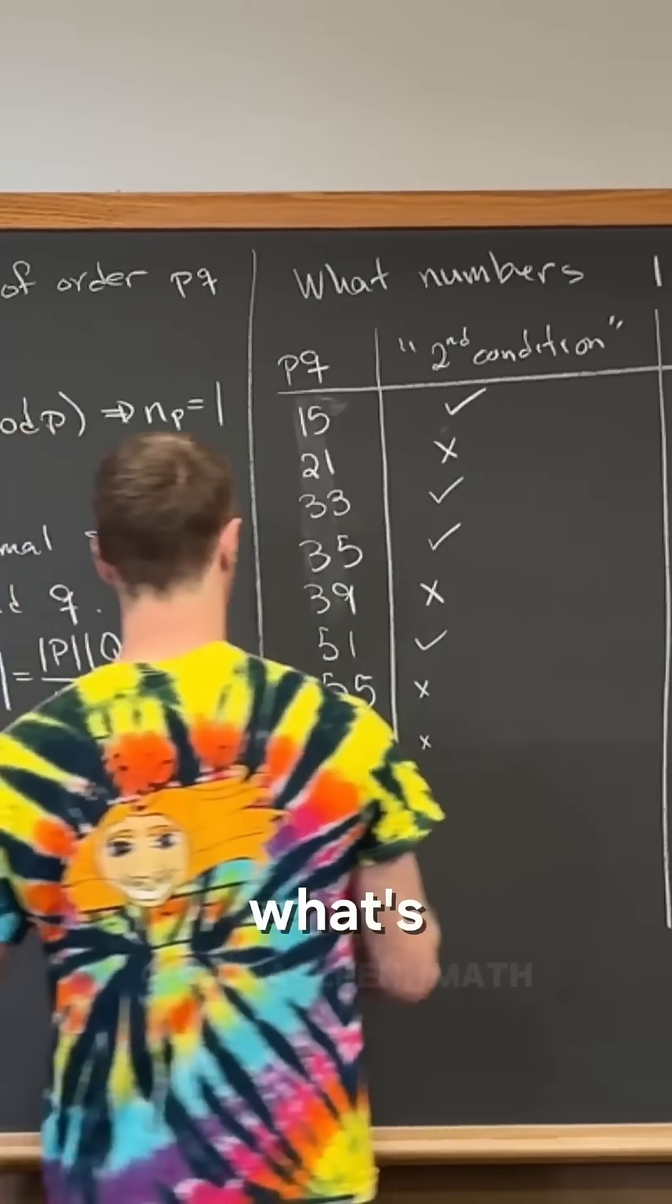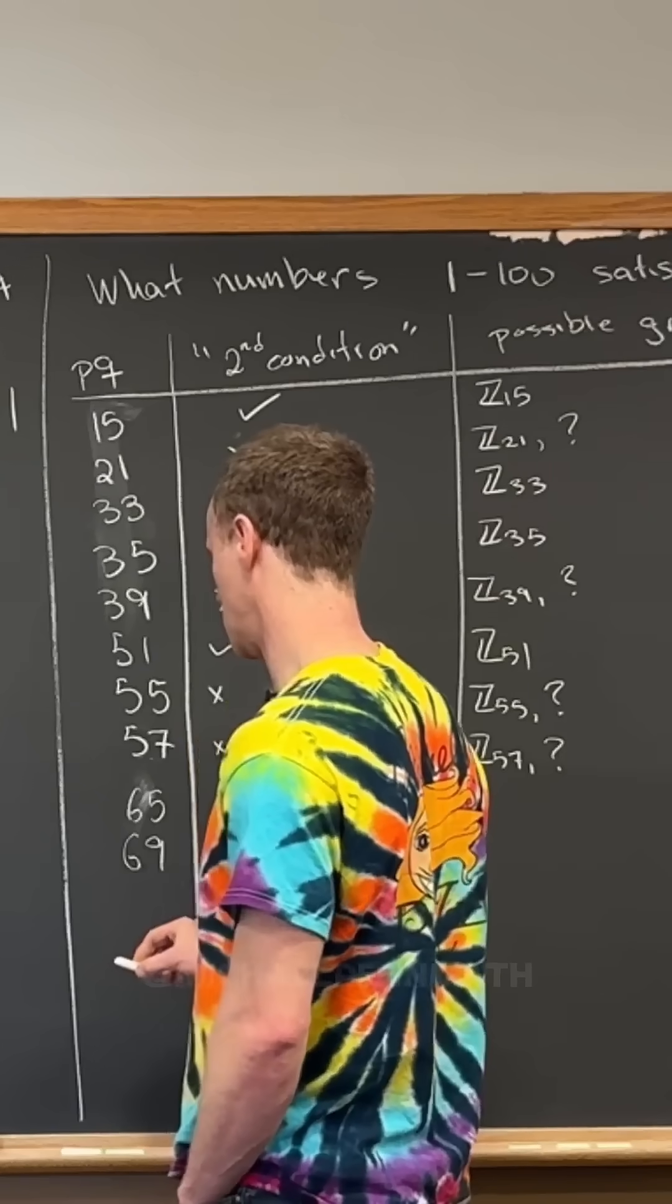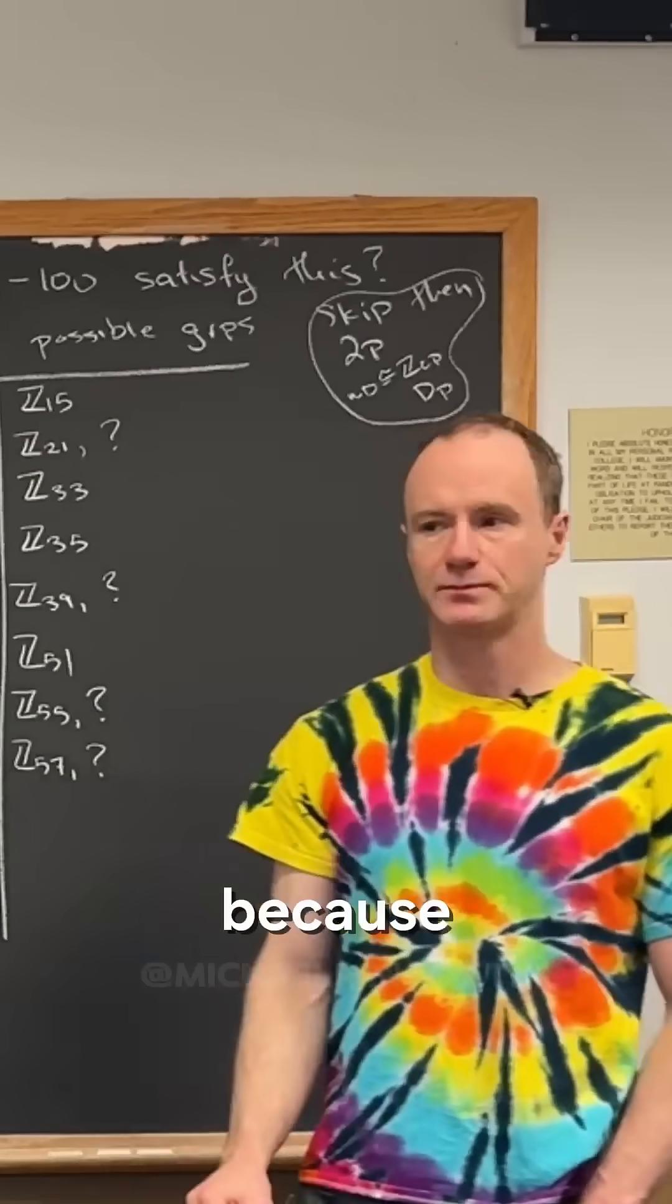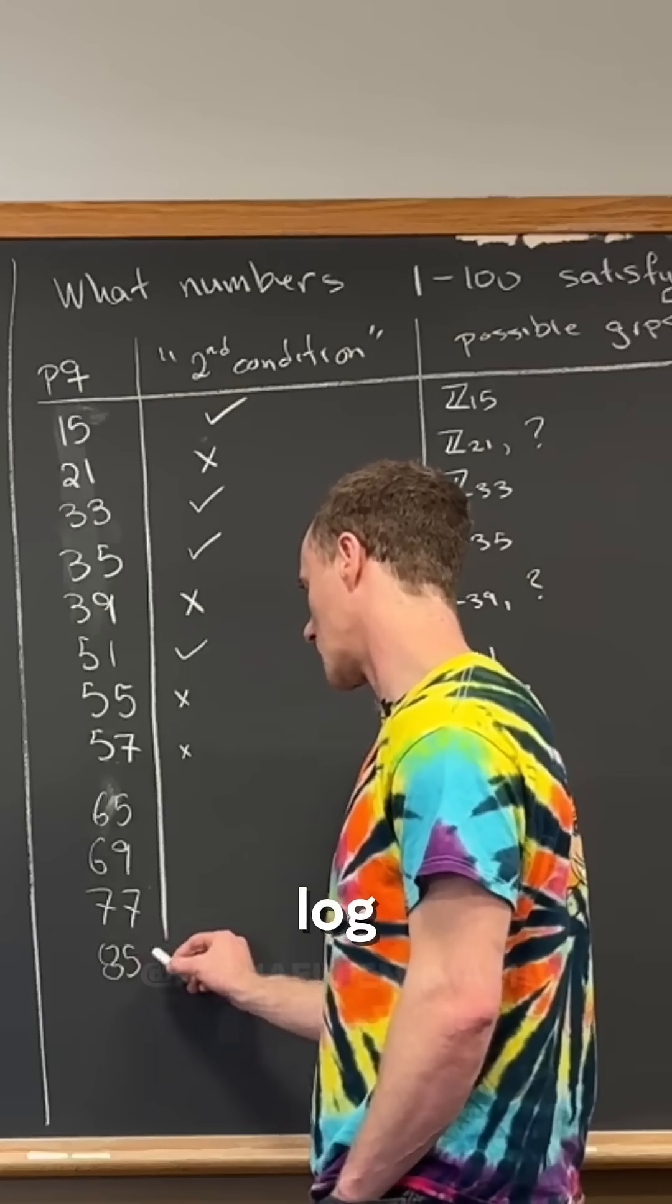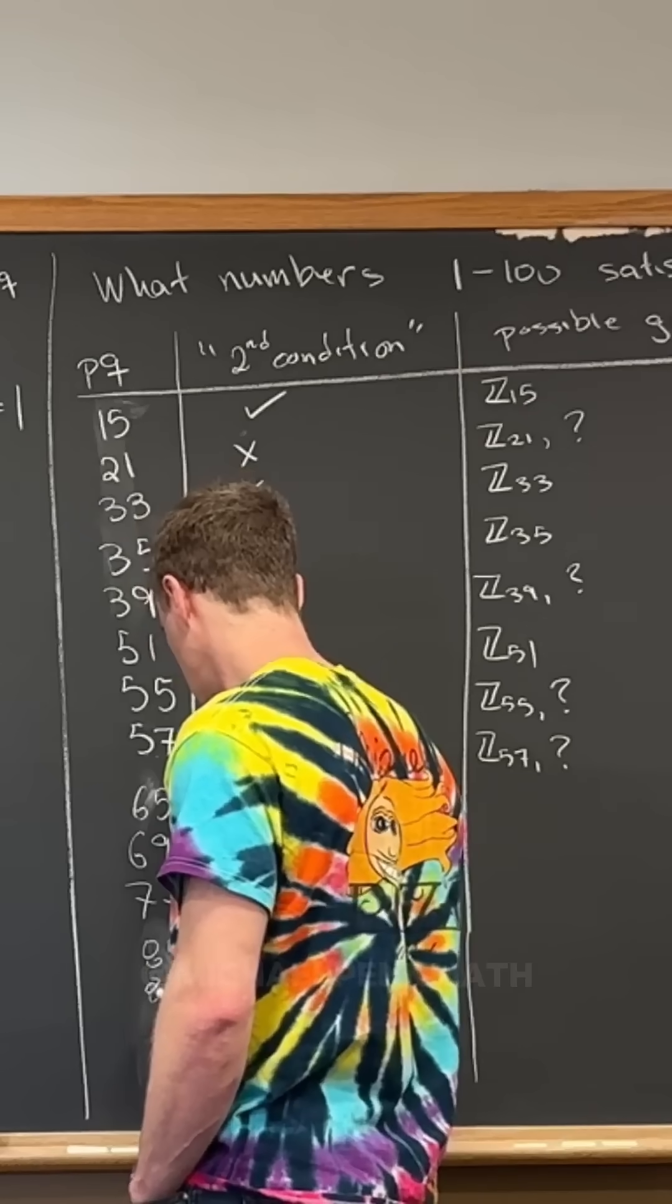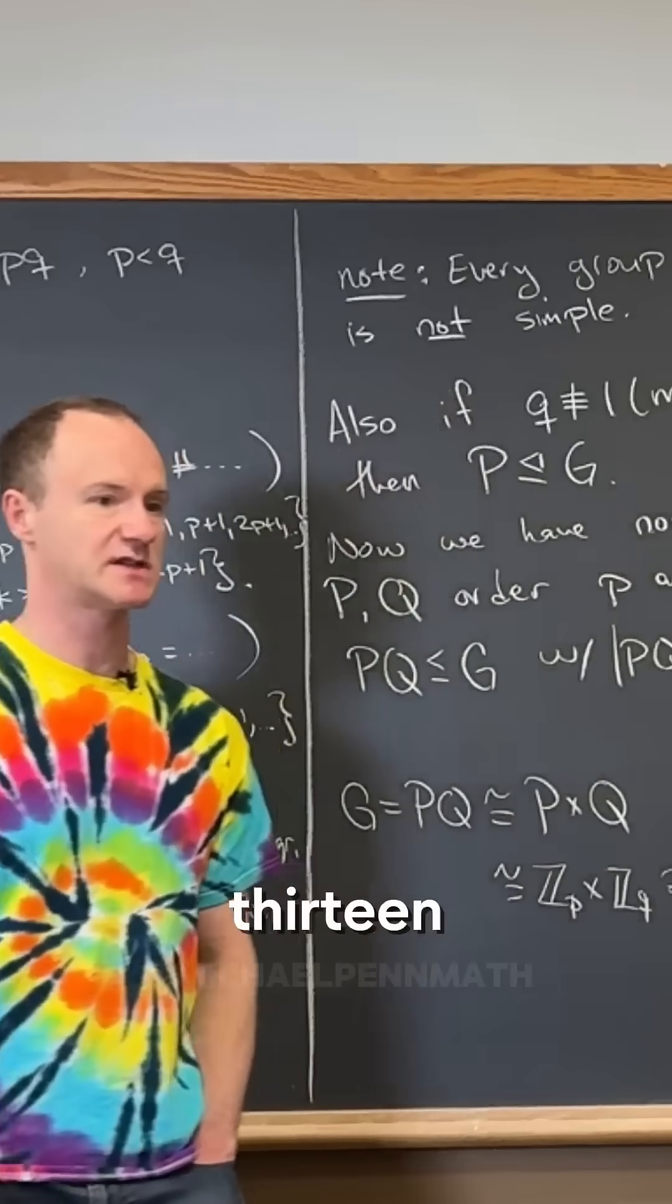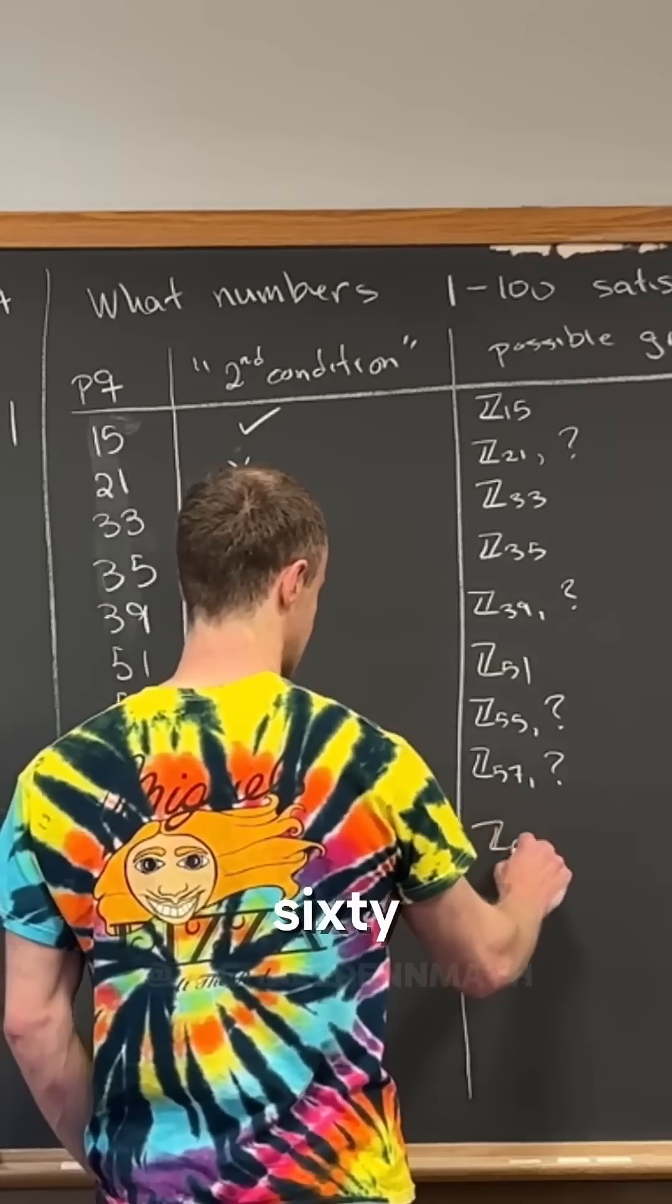Now let's go, what's after this? 65, 69. Yeah, they're going to get more sporadic, right? Because primes get further apart. They go like log log n. What's after that? 85, 87. 91, 93. 95. Okay, so 65, five times 13, satisfies the condition. So that means there's just Z65.